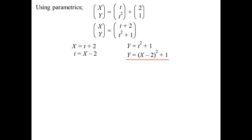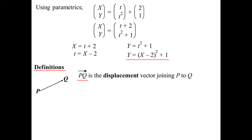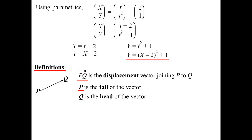So this is the sort of idea of using vectors to solve problems. Some definitions to start with. There's a vector PQ — as I said before, it's called a displacement vector. So when we're joining two points, in this case P and Q, notice the arrow on top: it tells you the direction of the vector, so P to Q. If I had put QP there, I'm talking about a different vector because the direction would be different. P is what we call the tail — where the vector starts. Q would be the head — that's where we end up.